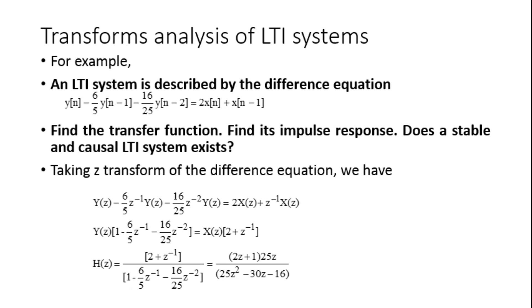For example, an LTI system is described by the difference equation: y(n) minus 6/5 times y(n minus 1) minus 16/25 times y(n minus 2) equals 2x(n) plus x(n minus 1). Find the transfer function and impulse response, and determine if a stable and causal LTI system exists. Taking the Z-transform of the difference equation, we have Y(z) minus 6/5 z inverse Y(z) minus 16/25 z to the power minus 2 times Y(z) equals 2X(z) plus z inverse X(z).